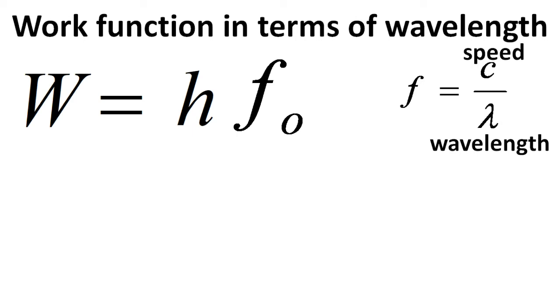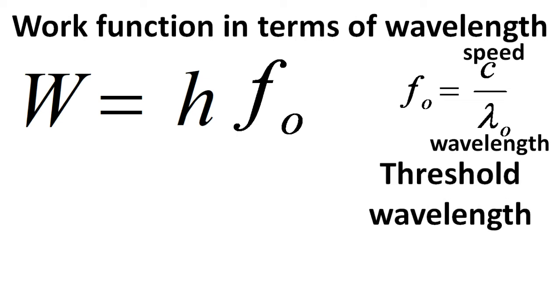If we replace the f in that equation with f0, we should also replace lambda with lambda0. And we have f0 equals c over lambda0. Correct. Lambda0 is similarly called the threshold wavelength. In our equation of the work function, we can replace f0 with c over lambda0. And that gives W equals hc over lambda0. Great.